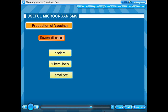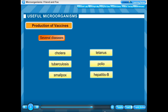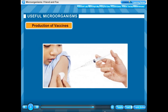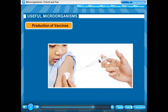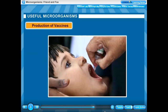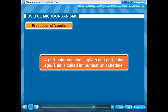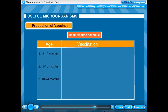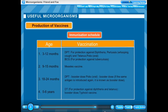Several diseases including cholera, tuberculosis, smallpox, tetanus, polio and hepatitis B can be prevented by vaccination. A vaccine can be either injected or given orally, and a particular vaccine is given at a particular age. This schedule is called the immunization schedule. This is an immunization schedule followed in India.